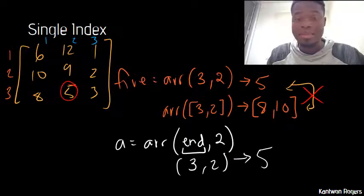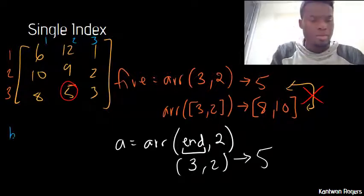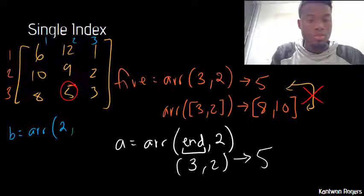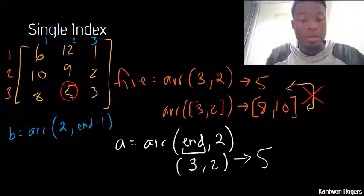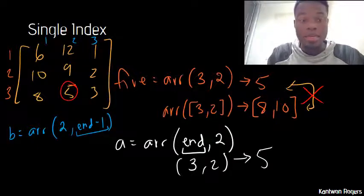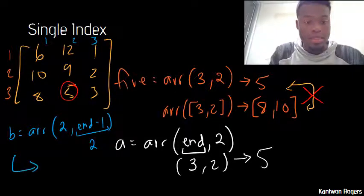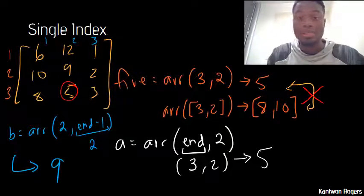I can do math with `end` just like before. So if b is equal to my array of 2 comma end minus 1 — here I'm using `end` in terms of my columns, so `end` corresponds to 3 because there are three columns. So I'm doing 3 minus 1, which is 2. This is the same as saying 2 comma 2, so I get back the 9 because that's at the second row, second column.